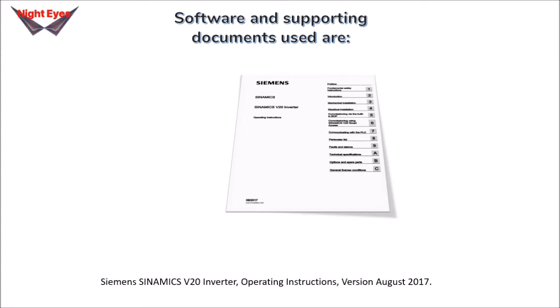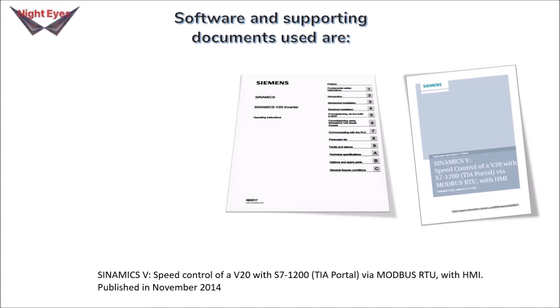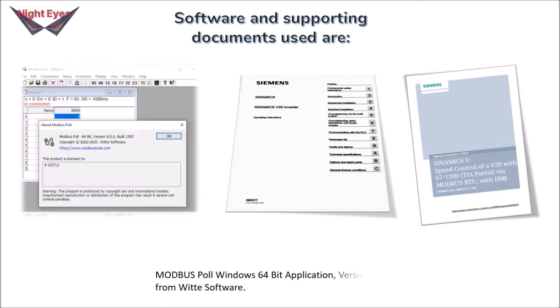Software and supporting documents used in this session are: the Siemens SINAMICS V20 Inverter Operating Instructions, version August 2017; the Siemens Application Document, SINAMICS V20 Speed Control with S7-1200 TIA Portal via Modbus RTU with HMI, published November 2014; and the Modbus Poll Windows 64-bit application, version 9.5.0 from WIT Software.